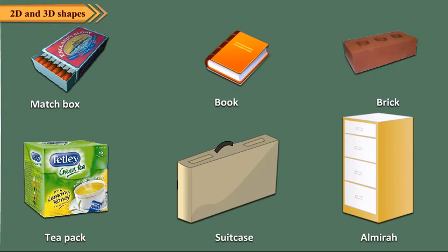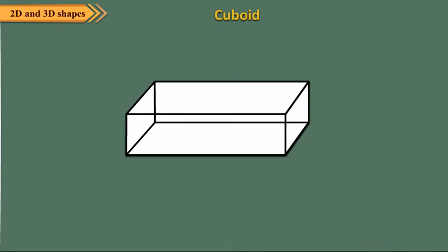Look at the shapes of objects shown here. All these objects have the shape of a cuboid. A cuboid has 12 edges. The point where three edges meet is called a vertex. A cuboid has eight vertices. A cuboid has six faces.